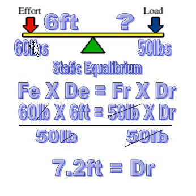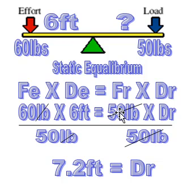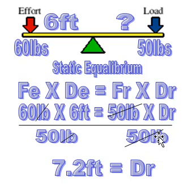If you have distance of effort missing, force of effort missing, or force of resistance missing, you simply take the numbers that you have in your equation and plug them in where they belong, doing the same steps as last time — dividing out the number that is next to the variable. The first example is D of R, but it could very well have been F of E. You would just divide the number next to it out along with the units. If it was D of E, then you would divide six feet from both sides of the equation.